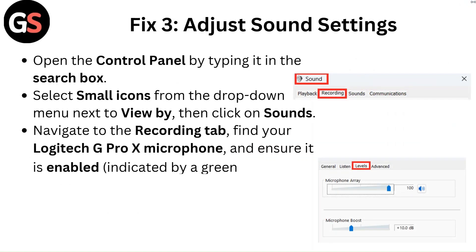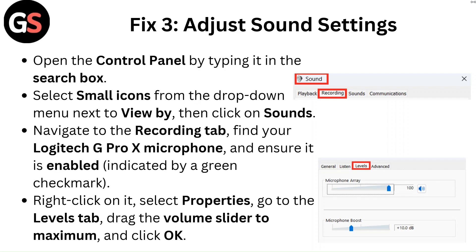Fix 3: Adjust sound settings. Open the Control Panel by typing it in the search box. Select small icons from the drop-down menu next to View By, then click on Sounds. Navigate to the Recording tab, find your Logitech G Pro X microphone, and ensure it is enabled — indicated by a green check mark.